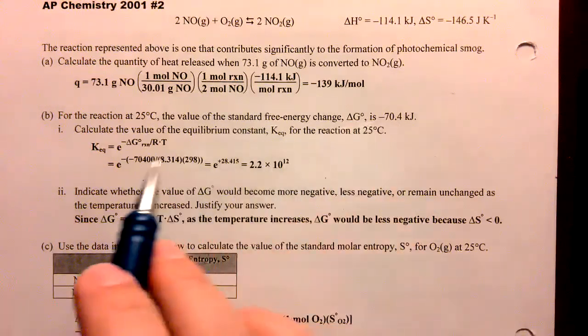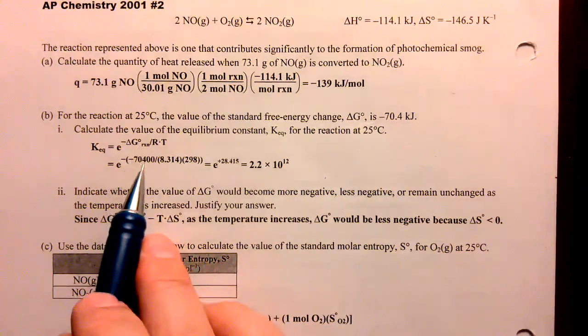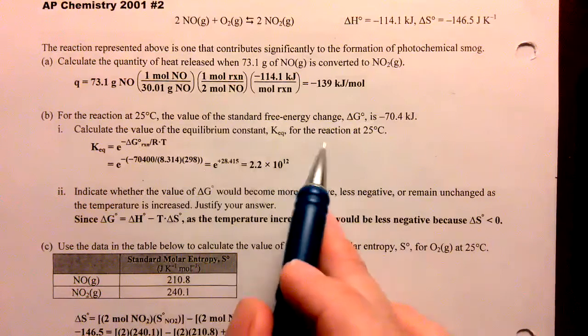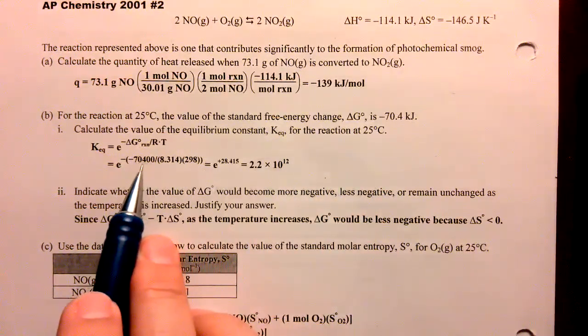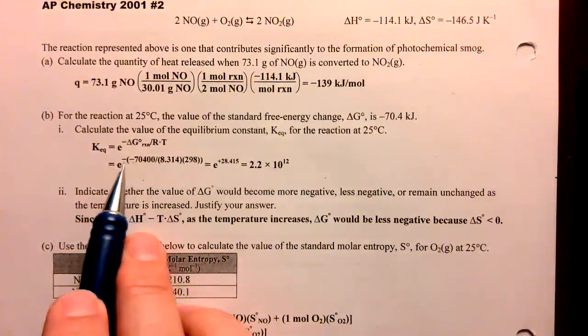Remember we have delta G standard and we're just going to put it in here. We know the temperature is 298 Kelvin. Remember to make this joules by multiplying by a thousand.